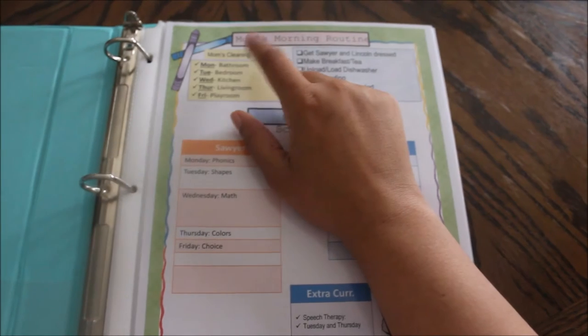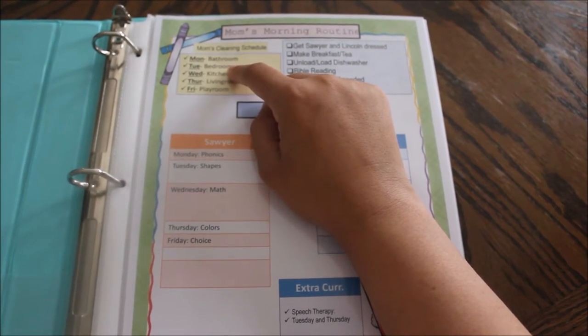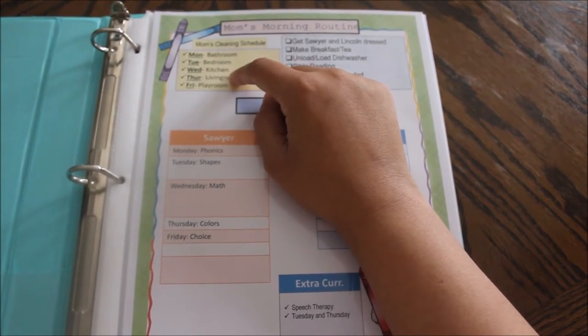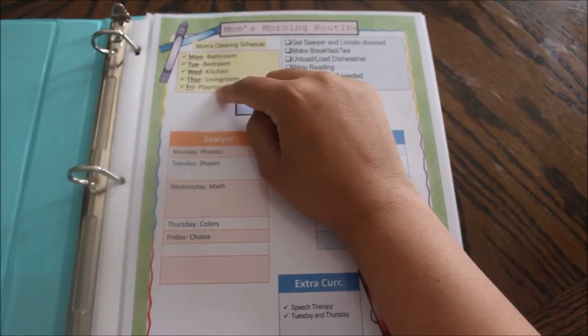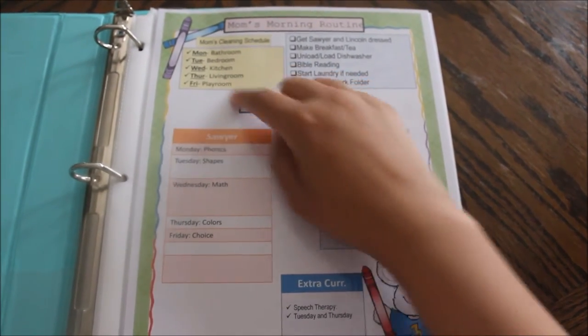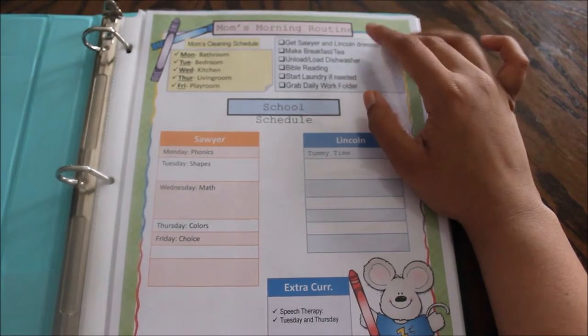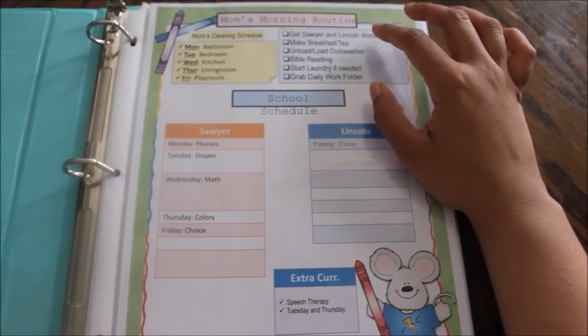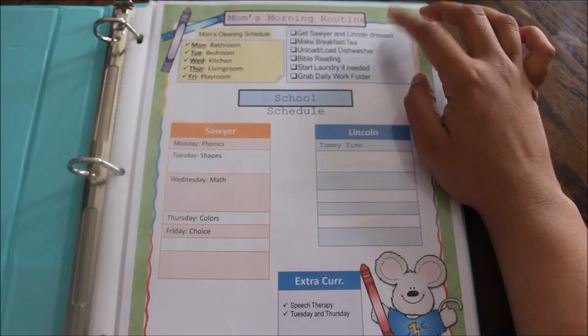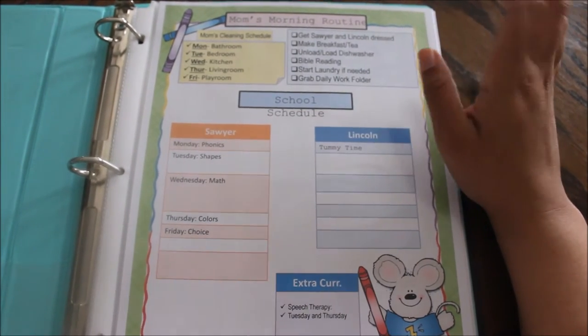So up here is my cleaning schedule. Monday is bathroom, Tuesday is our bedroom, Wednesday is the kitchen, Thursday is the living room, and then Friday is the playroom or the schooling room. And then over here is another part of my morning routine that I want to do before we start school. So get them both dressed, make breakfast for them and tea for me or coffee.